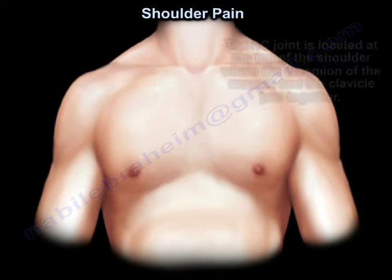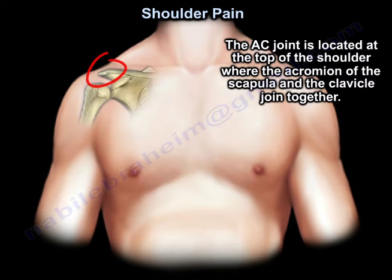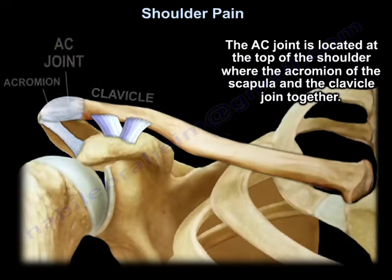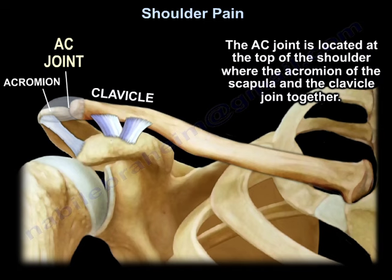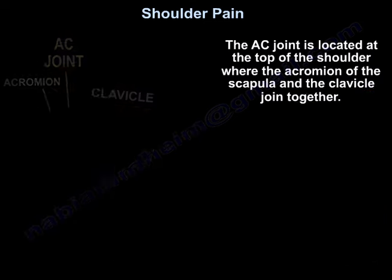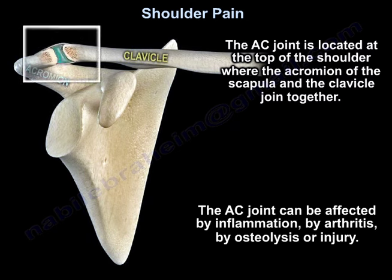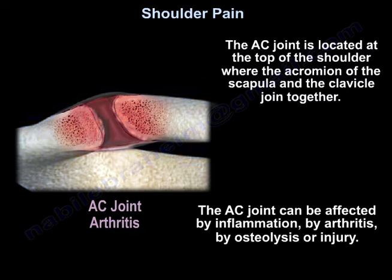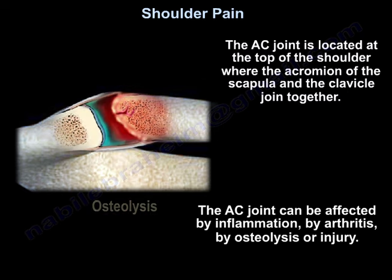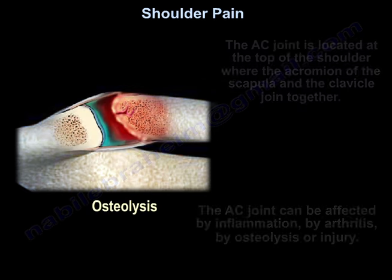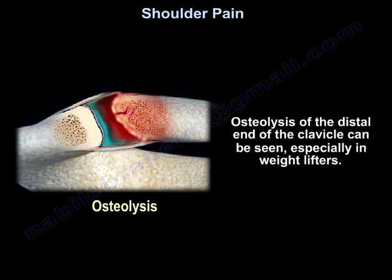The AC joint is located at the top of the shoulder, where the acromion of the scapula and the clavicle join together. This joint can be affected by inflammation, arthritis, osteolysis, or injury. Osteolysis of the distal end of the clavicle can be seen especially in weight lifters.